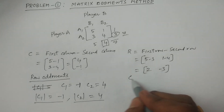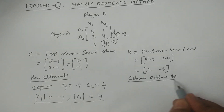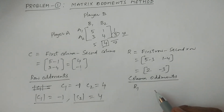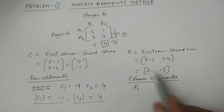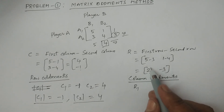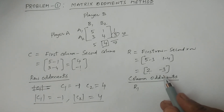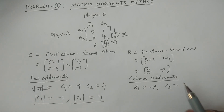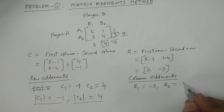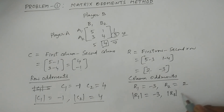Now calculate column oddments. The column oddments are determined by deleting the jth column. R1 is equal to -3 and R2 is equal to 2. First column oddment: R1 determined as single element = -3. Second column oddment: R2 determined as single element = +2. These are the column oddments.